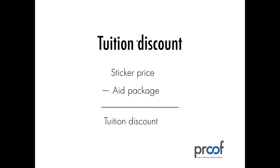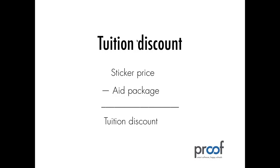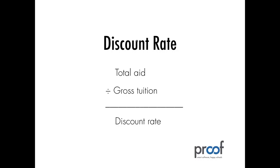The tuition discount term in net revenue management speak is the sticker price minus your financial aid package. And the discount rate is simply your total aid awarded divided by the gross tuition — that gives you a discount rate. So your discount is what you say your price is, minus your aid, and the discount rate is all of that aid divided by gross tuition.